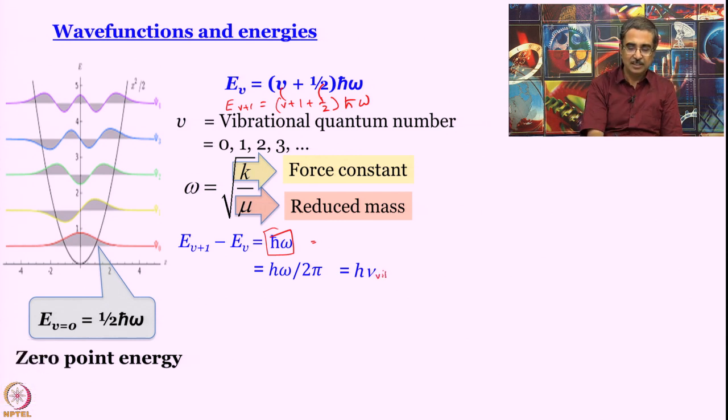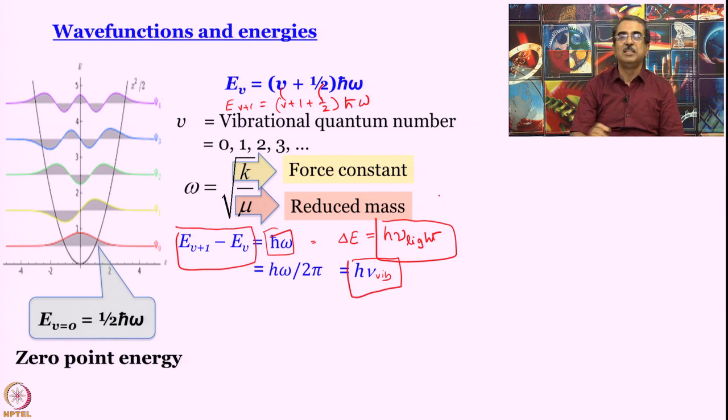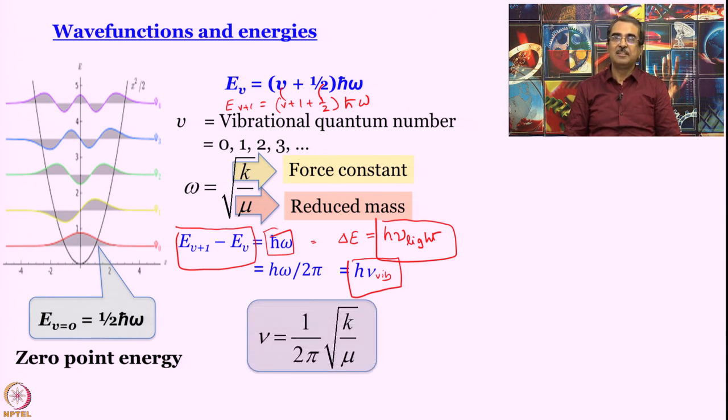But now, we are in an interesting situation. What is there on the left hand side? E_v+1 minus E_v, that is delta E. Do you remember what delta E is? It is called Bohr resonance condition, that is equal to h nu light. So what it turns out is that this h nu light is equal to h nu vibration, h and h cancel, you are left with nu light is equal to nu vibration. So a simple harmonic oscillator would absorb only that light, for delta v equal to one kind of transition, which is the only transition that is allowed, it is going to absorb that light whose frequency is exactly equal to the vibrational frequency. So you can write like this, vibrational frequency is 1 by 2 pi root over k by mu.